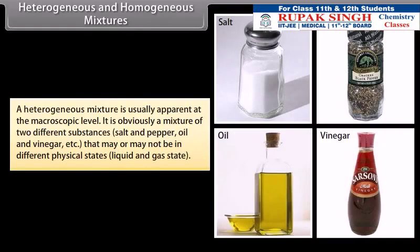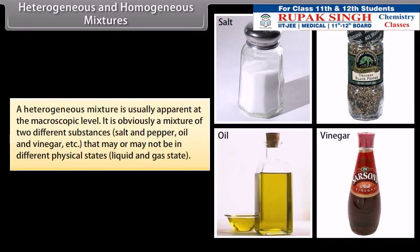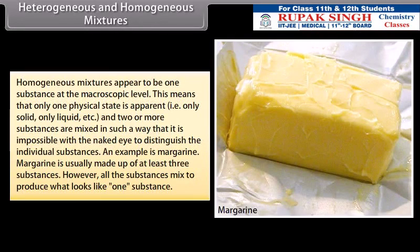A heterogeneous mixture is usually apparent at the microscopic level. It is obviously a mixture of two different substances, such as salt and pepper, or oil and vinegar, that may or may not be in different physical states. Homogeneous mixtures appear to be one substance at the macroscopic level, meaning only one physical state is apparent. Two or more substances are mixed in such a way that it is impossible with the naked eye to distinguish the individual substances. An example is margarine, which is usually made up of at least three substances, but all the substances mix to produce what looks like one substance.